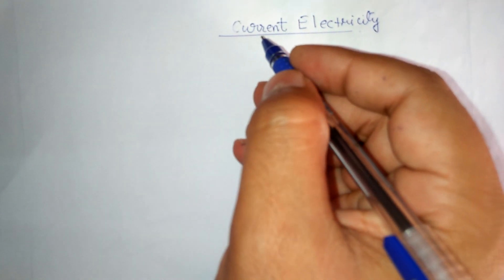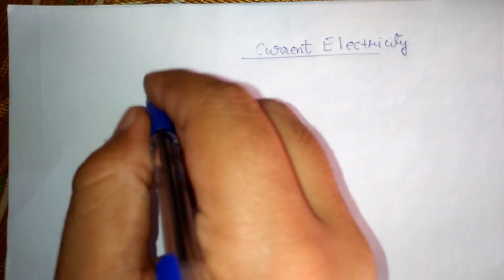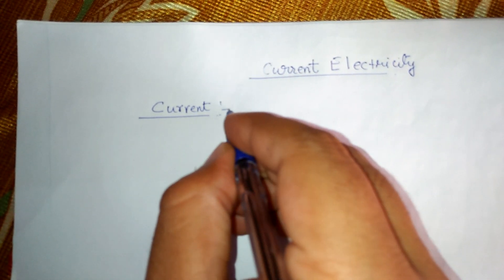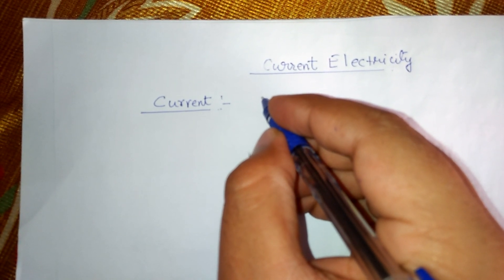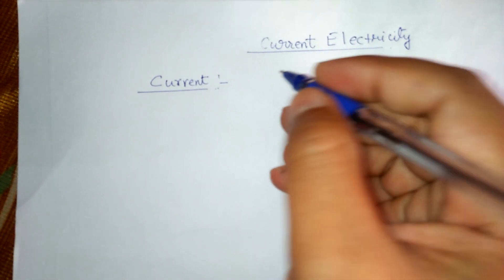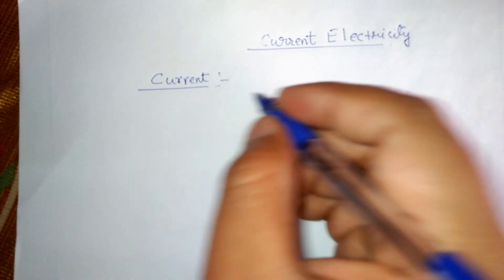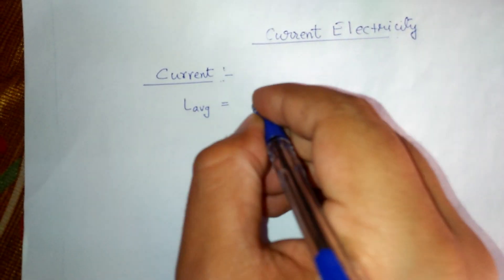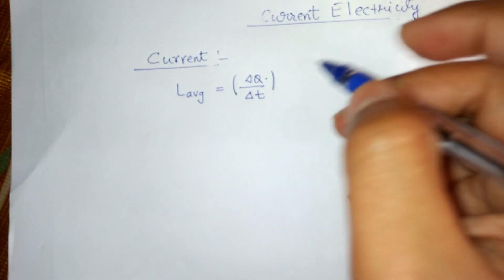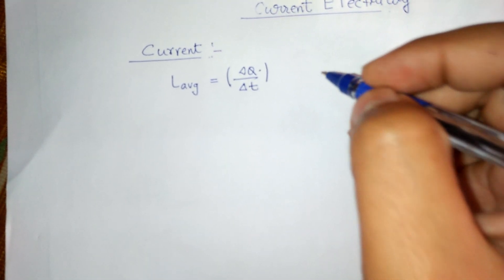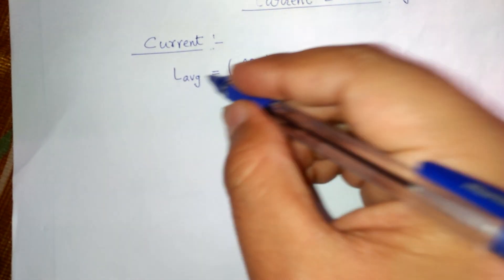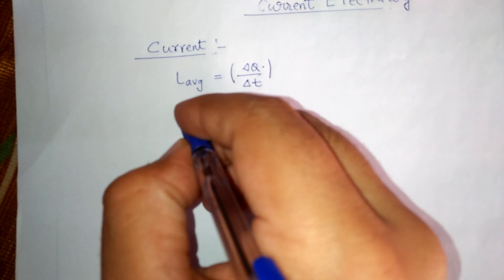In this chapter, first of all we will see the concept of current. Current is basically defined as flow of charge per unit time. That is, if a delta q amount of charge is flowing in a time interval of delta t, then we will have an average current, and that is delta q upon delta t. This delta q will flow through a cross-sectional area — the effective area which is perpendicular to the direction of current flow. That is our average current: delta q upon delta t.